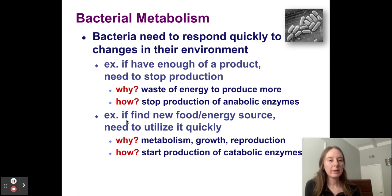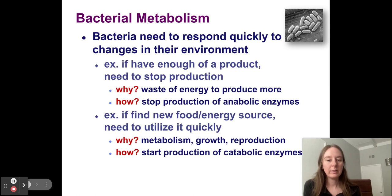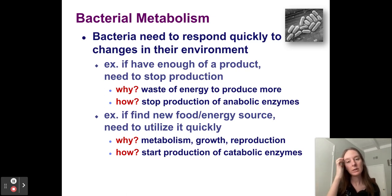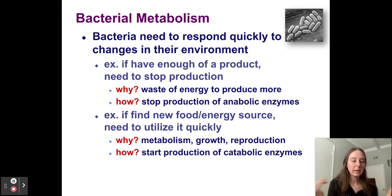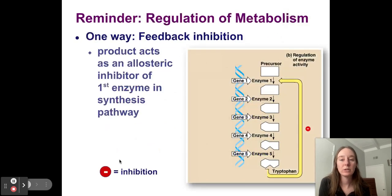Let's look at another scenario. If a bacteria finds a new food source and needs to use it quickly, it'll take in that molecule and break it down for energy, using that energy for growth and reproduction. It might need to start producing new catabolic enzymes. Catabolism is the breaking down of molecules so the cell can metabolize. So the bacteria will turn on certain genes that build enzymes for catabolism — for breaking down molecules so that it can get energy from the materials it takes in. All of this has to do with survival: turning genes on or off to save energy and survive in the environment.